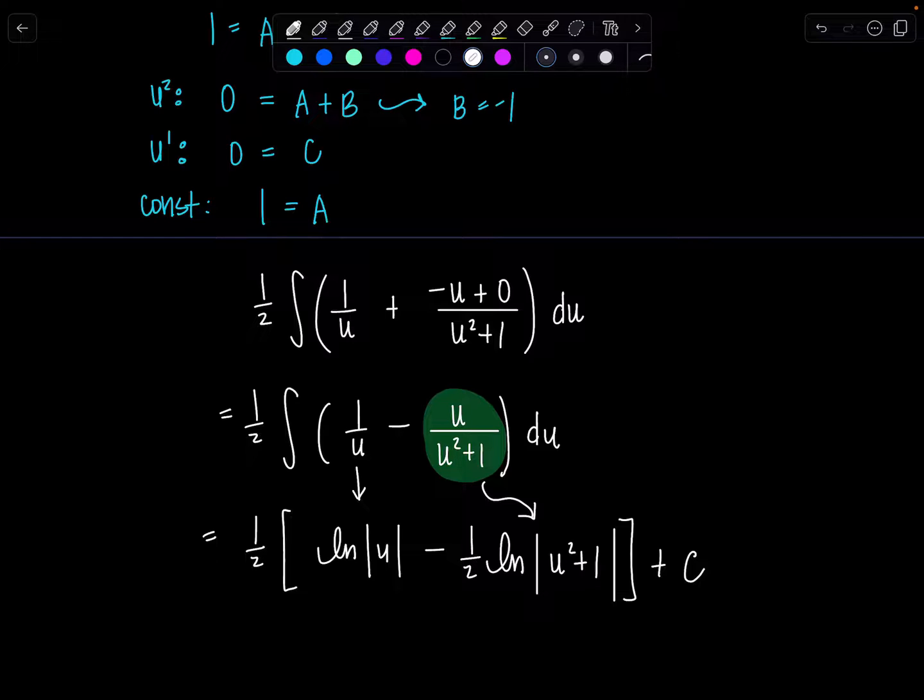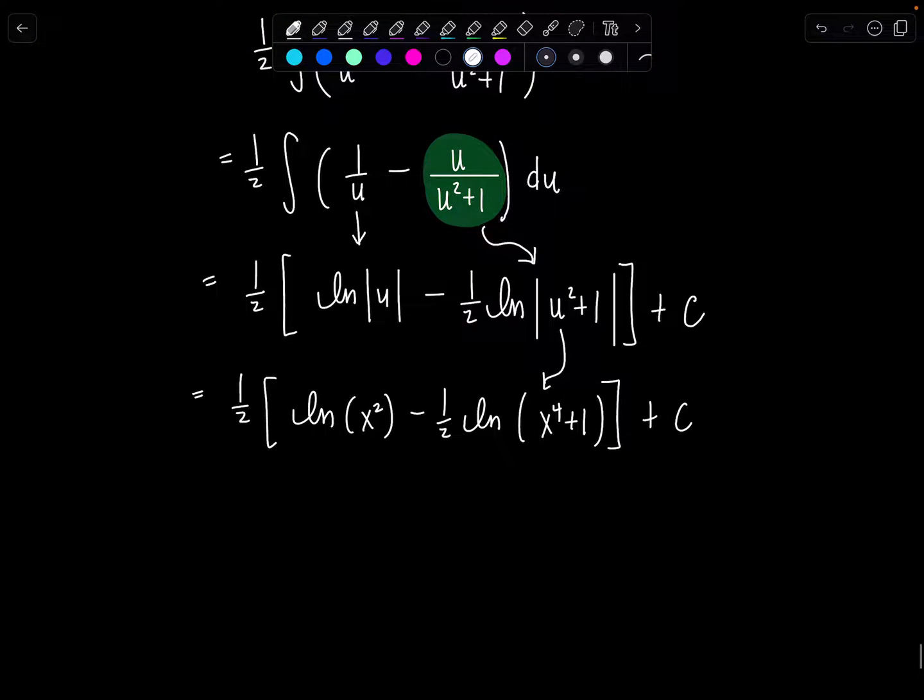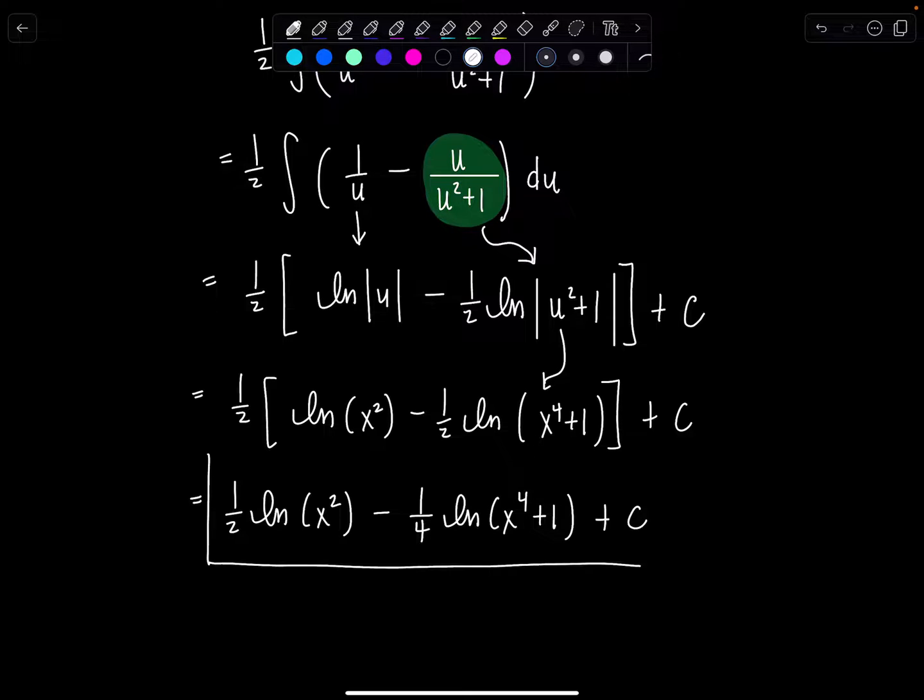Good. Now go back. Remember, originally in the problem, u was equal to x squared. So let's sub that all back in. 1 half natural log. Now x squared isn't negative. So I don't need to put absolute value. I'm just going to switch it to parentheses. Minus 1 half ln x squared squared would be x to the fourth plus 1. Again, I don't need parentheses plus C. Okay, now you have a couple choices. You could just distribute the 1 half through from here. 1 half ln x squared minus 1 fourth ln x to the fourth plus 1 plus C. I would not have a problem if my students left their answer like this. That's fine with me.